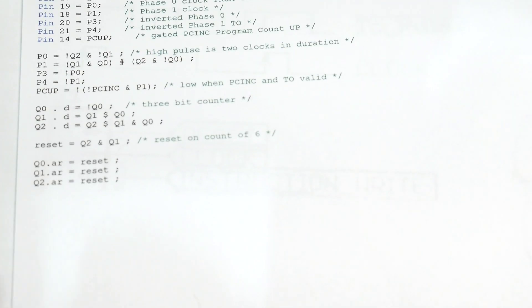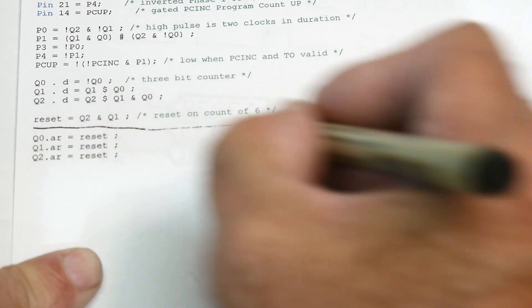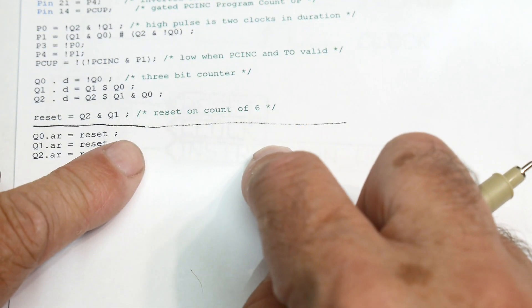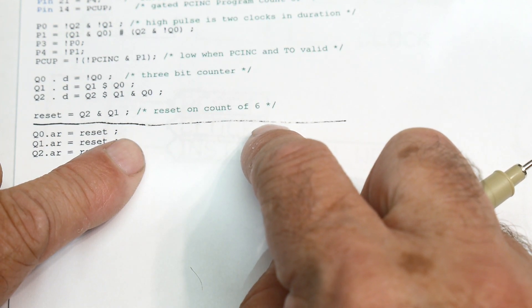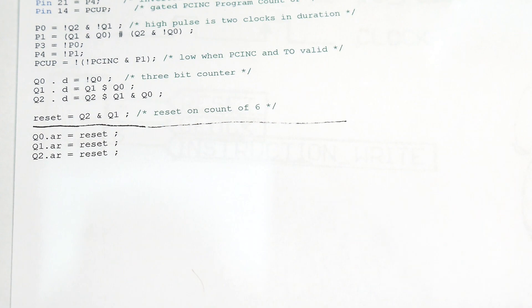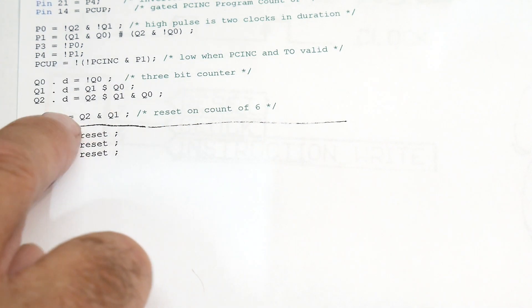So what I'm going to do to fix the problem is come down here - I'm going to get rid of this line and let it count to eight, just waste a couple of counts. But I'll get rid of that glitch and it'll just fix it up.